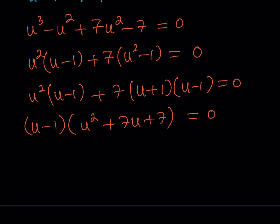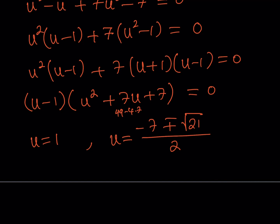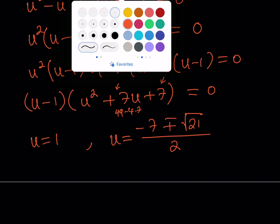This cubic seems to have three solutions. Checking the quadratic piece: b squared minus 4ac gives 49 minus 28 equals 21, which is positive, so all three roots are real. However, using Vieta's formulas on the quadratic piece, the product of the two roots is positive and their sum is negative, meaning both roots from the quadratic are negative. Since u must be positive — because u equals 2ab equals 2(a minus b) and a is greater than b — those two roots are rejected.